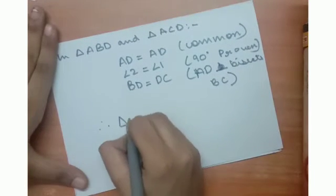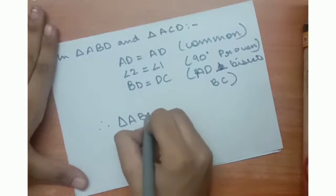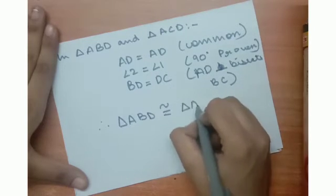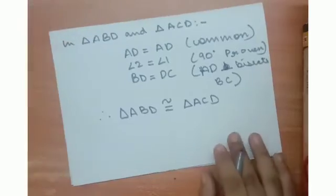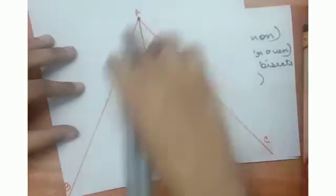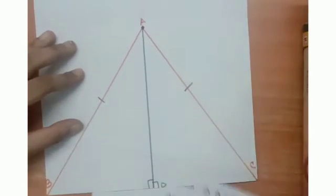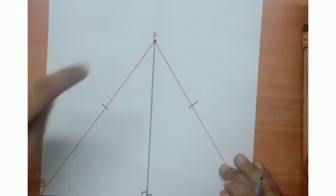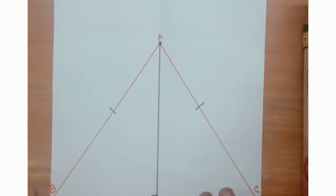Therefore, triangle ABD is congruent to triangle ACD by SAS. By proving this congruence, what do we get? We get that AB is equal to AC by CPCT, and thus we proved it isosceles. Therefore triangle ABC is isosceles.